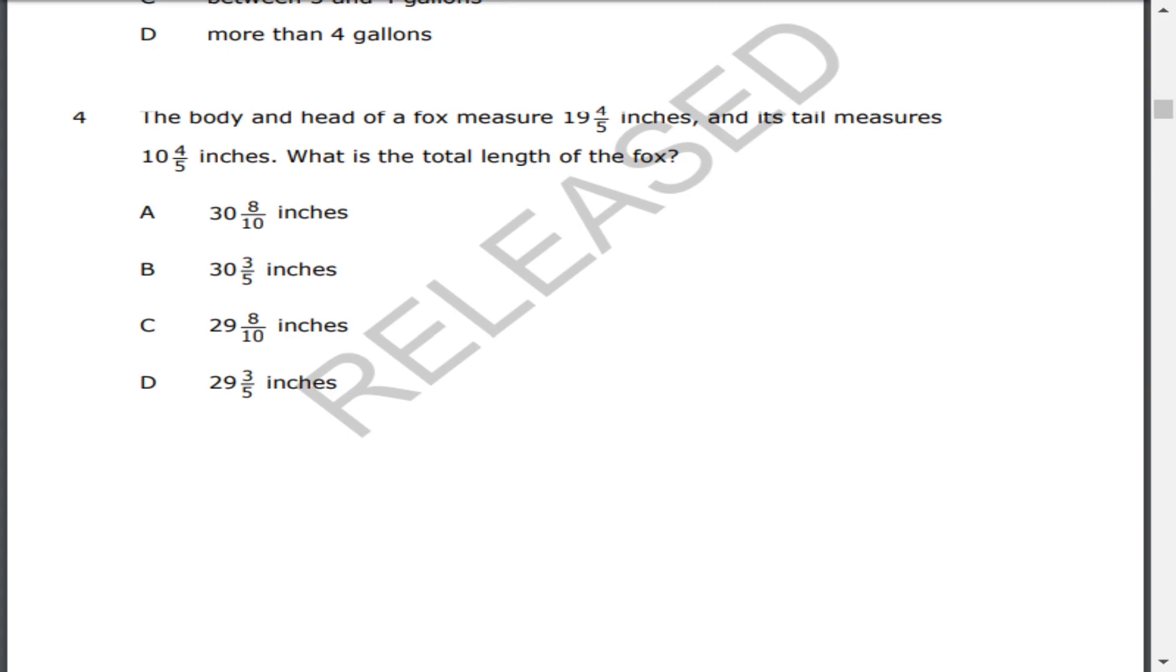Four. The body and head of a fox measure 19 and 4/5 inches and its tail measures 10 and 4/5 inches. What is the total length of the fox?